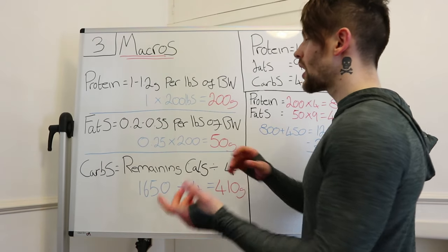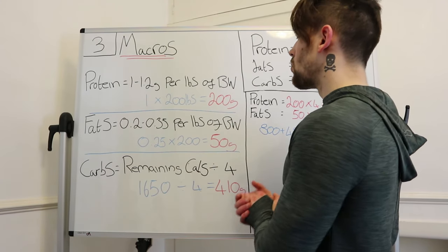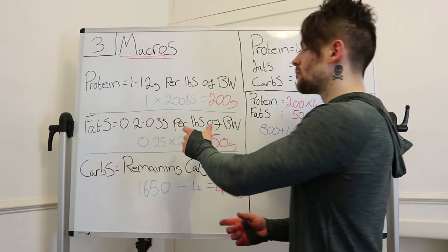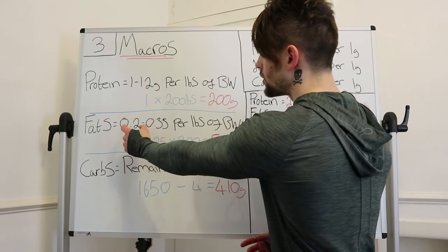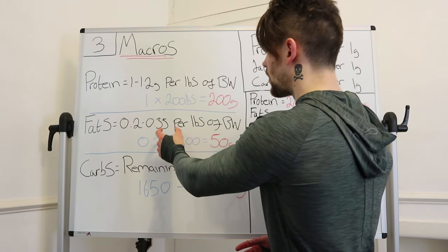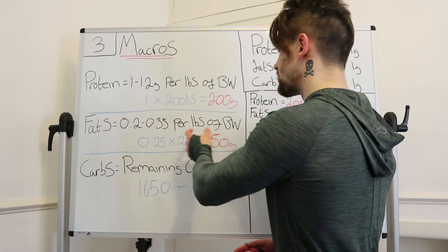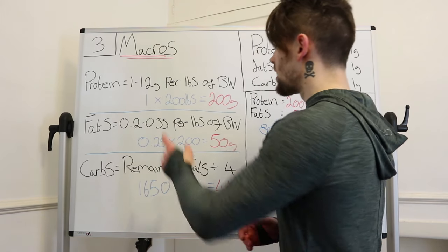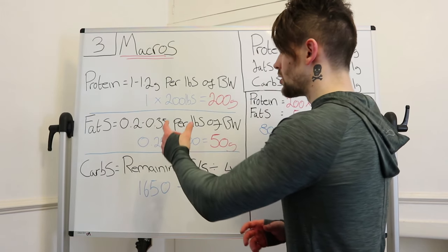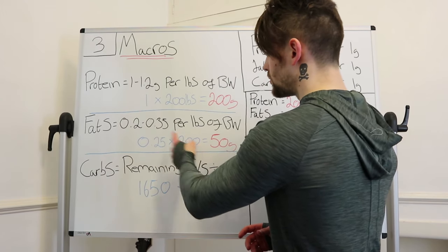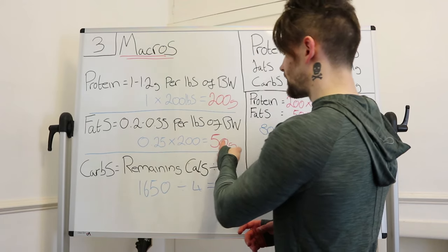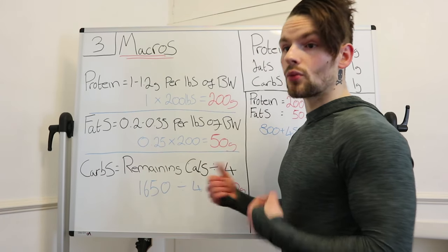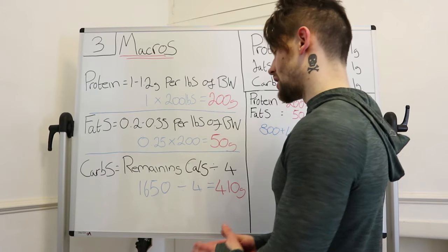The second thing we're going to work out is our fat. We're still going to use our body weight, but we multiply it by either 0.2 or 0.35 per pound of body weight. We'll go with a good average of 0.25, so 200 times 0.25 gives us 50 grams of fat per day.